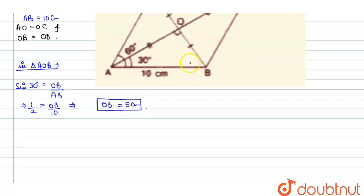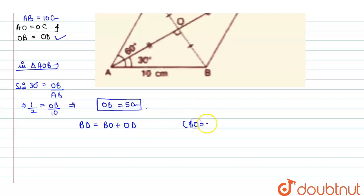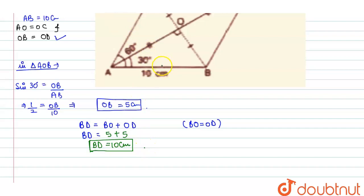Since diagonals of a rhombus bisect each other, OB equals OD. So if OB equals 5 centimeters, then OD also equals 5 centimeters. Therefore BD equals BO plus OD, which is 5 plus 5, giving BD equals 10 centimeters. This is our first diagonal.